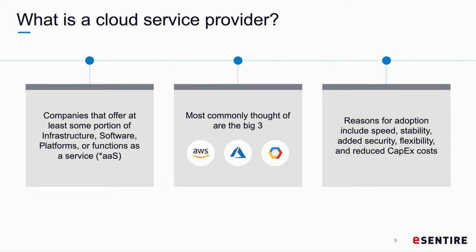A cloud service provider is a company that provides something as a service. Traditionally it's infrastructure as a service — VMs hosted on someone else's hardware. But it's becoming more advanced with the big three: AWS, Azure, and Google Cloud, offering software as a service, functions, and advanced microservices. The main reasons for moving to the cloud are ease of use, speed, stability of deployments, and converting capital expenditure for on-prem servers into OpEx.